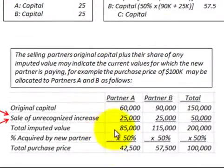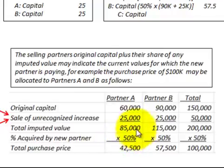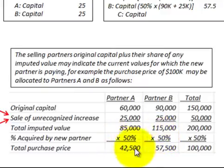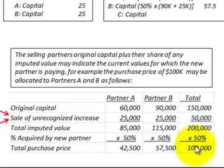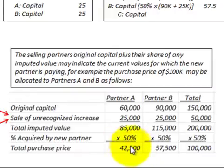In summary, we went through this calculation to determine what Partner C should be paying Partner A for 50% of Partner A's capital, and Partner B for 50% of Partner B's capital. Partner C should be paying Partner A $42,500 and Partner B $57,500, based on the $100,000 investment Partner C is making. This calculation shows what Partner C might be paying each of the existing partners.